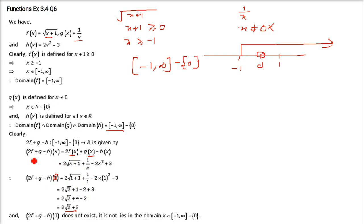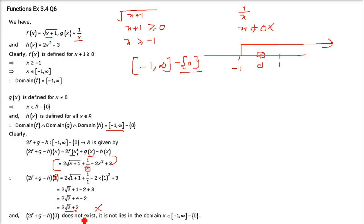When we do 2f plus g minus h, we are just putting x equal to 1. Now the second one is 2f plus g minus h at 0. When you put 0, you do not have to worry further, because we have already disregarded 0 — we said 0 cannot be in the domain. So if you put 0, it will be undefined. It does not exist. We cannot have 0 here because the domain excludes 0.